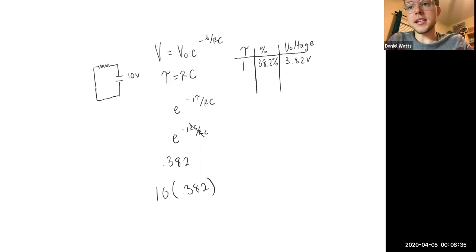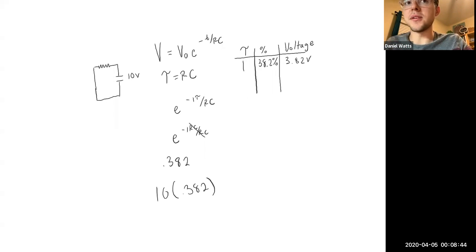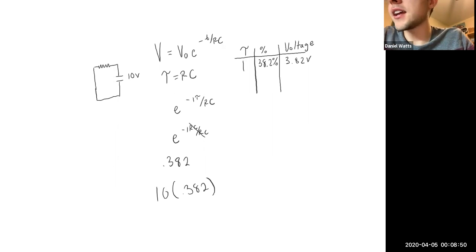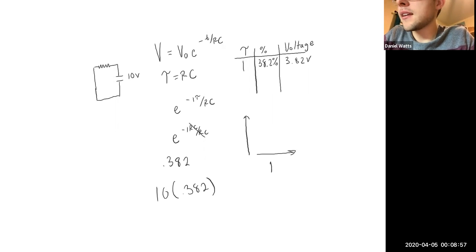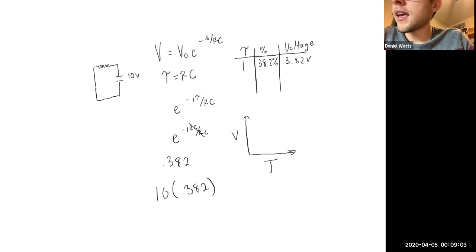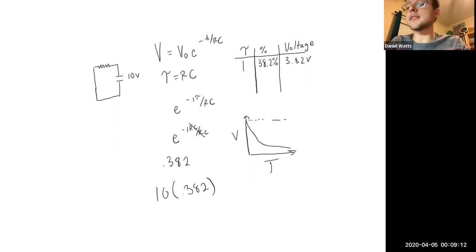To figure out the time constant, you just take the resistance times the capacitance and multiply them together — that gives you the time period of one time constant. Graphically, same setup as with charging: we've got time versus voltage. But now we start at the top at the initial voltage and the curve decreases over time as the capacitor is used to supply something.